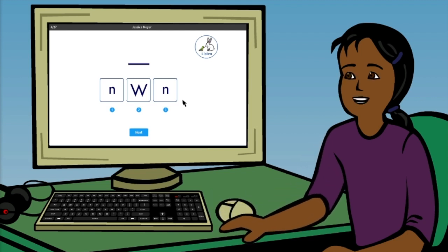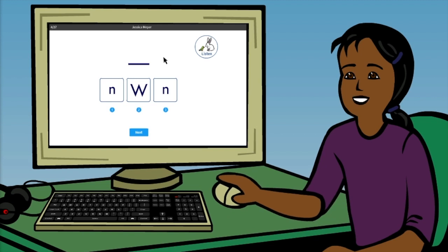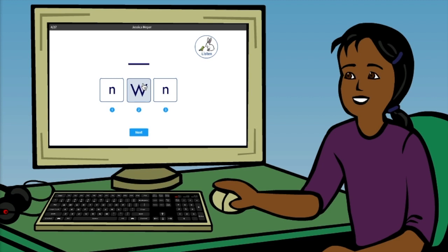First, I will show you how to use the mouse to pick an answer to the questions. As I move the mouse, the little arrow on the screen moves. When the little arrow turns into a hand, I'm ready to pick my answer. I click the mouse button.